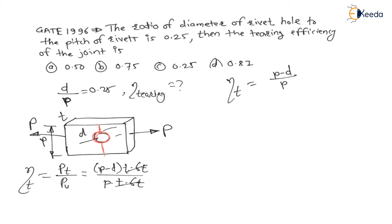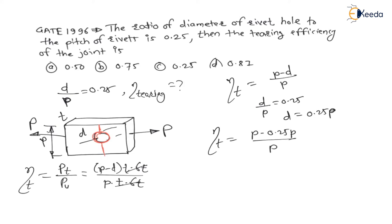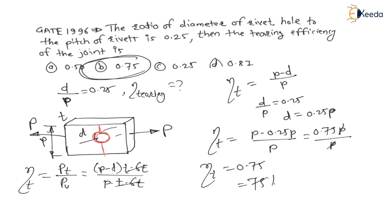Here, d divided by p is given as 0.25, so d equals 0.25p. Substituting, tearing efficiency equals (p minus 0.25p) divided by p, which is 0.75p divided by p. The p cancels, giving tearing efficiency equal to 0.75, which is 75%. Option B is the correct choice.